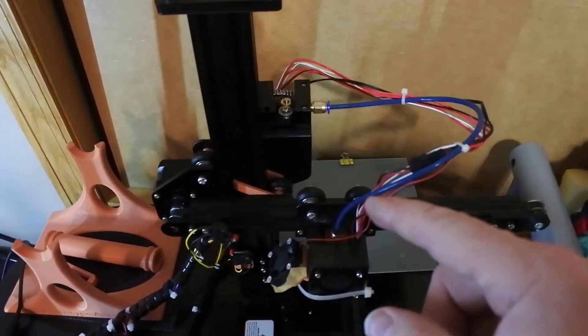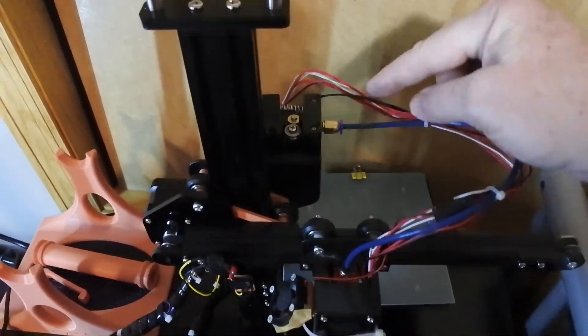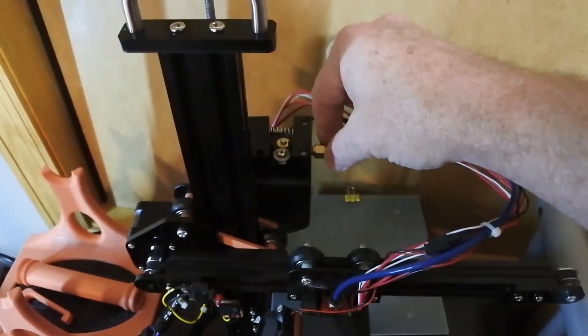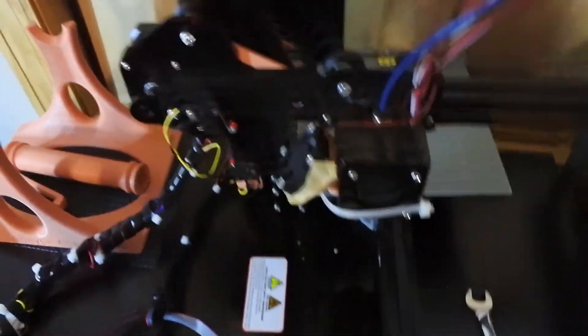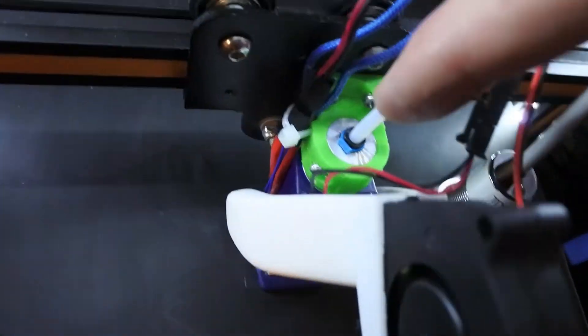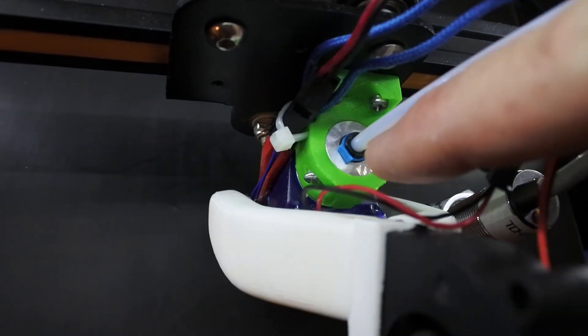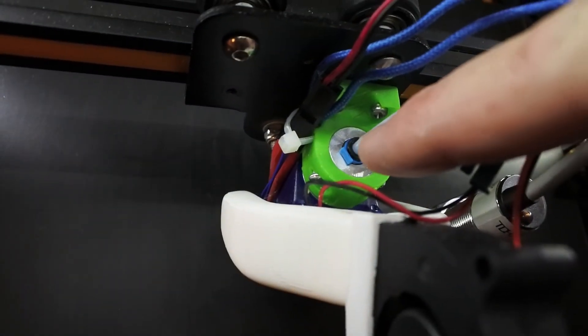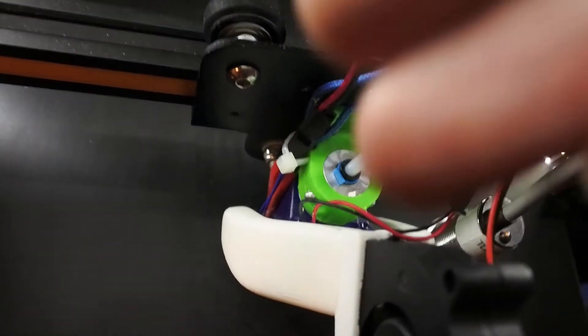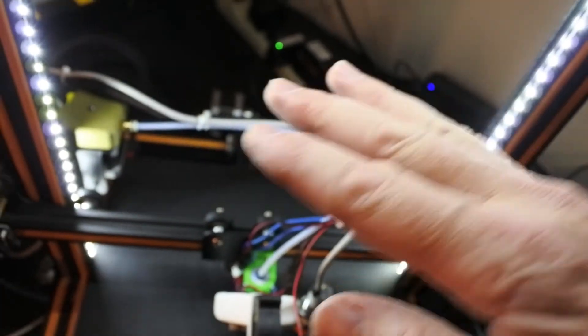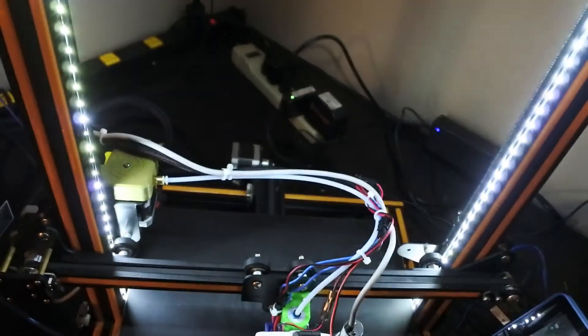So then once you have that nice and snug, all you got to do is push it in this other side. This one's spring loaded. If you look like on a CR10, you can see there's a clip that comes with the E3 V6 to keep that collar up. Because if it wants to drop down, that's when your Bowden tube can pop out.